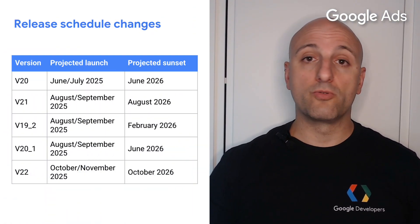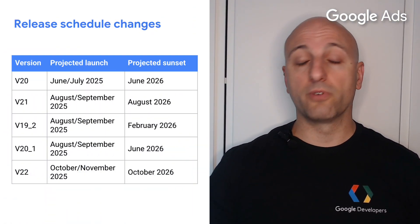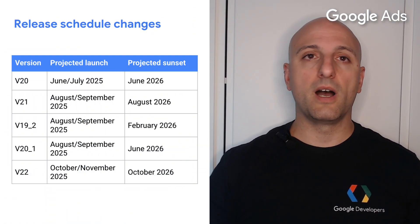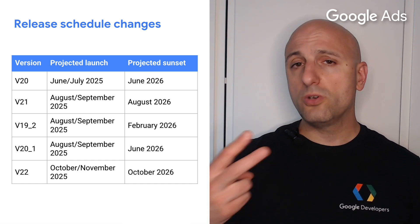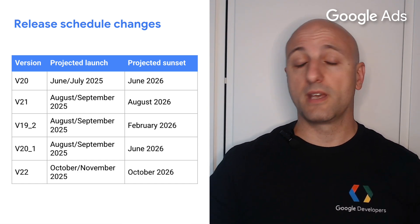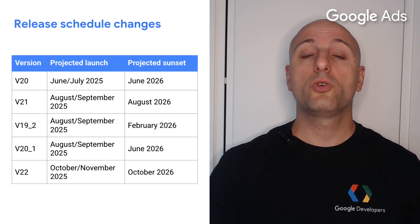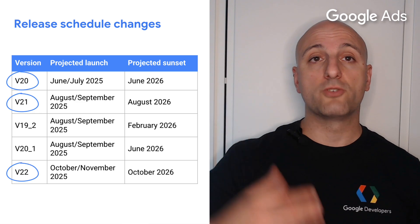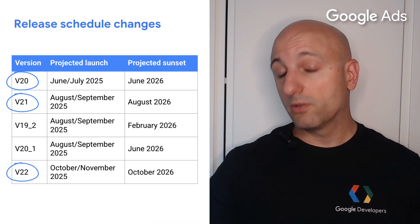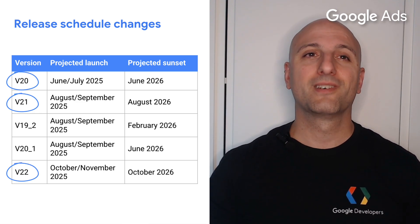Before we start looking into what's new in v20, we recently announced an update to the release schedule for the Google Ads API, which changed from having two major releases and one minor release for the rest of 2025, to having three major releases including v20, the one that just came out.